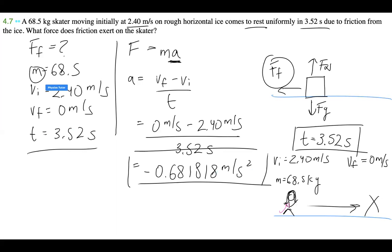There we go, that's our acceleration. We have our mass already, so our force of friction is going to be mass, 68.5 kg, times acceleration, -0.6818 m/s².